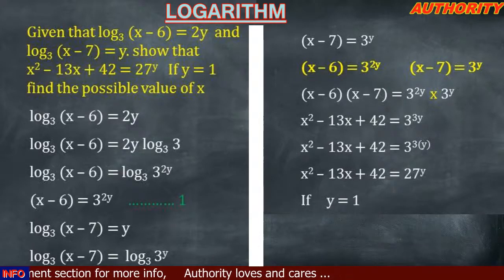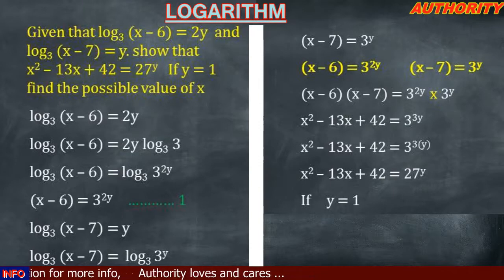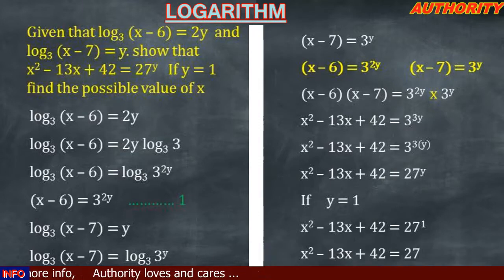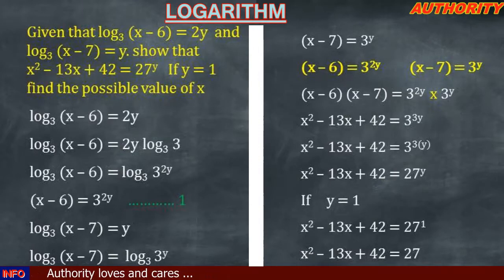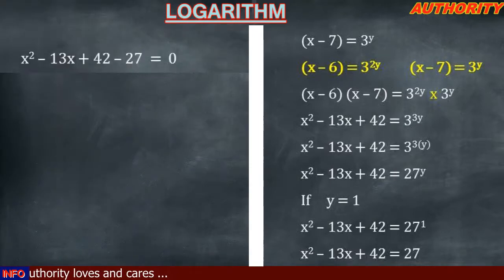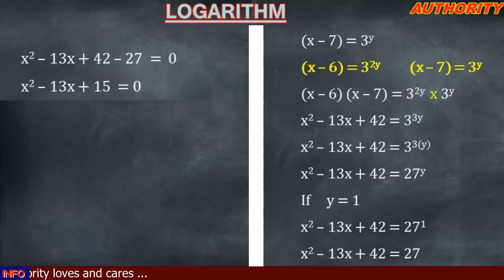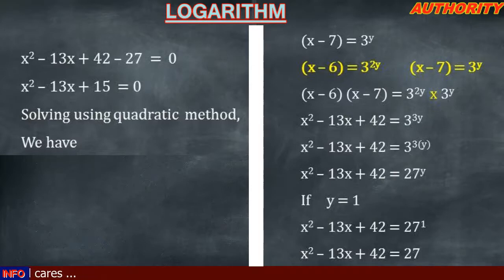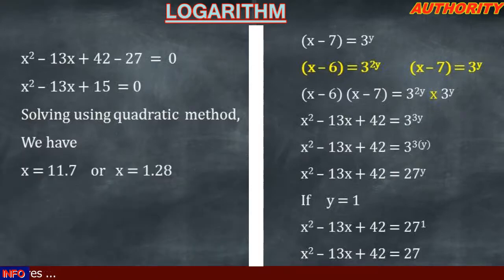For part two, if y equals 1, we substitute into the result: x squared minus 13x plus 42 equals 27^1, which equals 27. Bringing 27 to the left side gives x squared minus 13x plus 42 minus 27 equals 0, so x squared minus 13x plus 15 equals 0. Solving this quadratic gives x equals 11.7 or x equals 1.28. Thank you for watching, stay blessed.